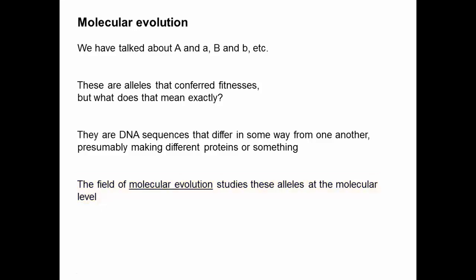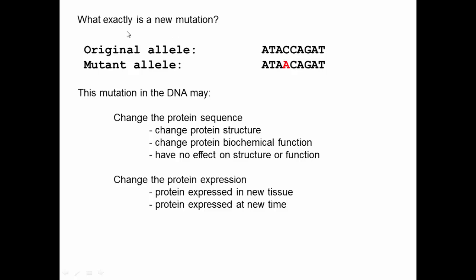If we think about new mutations, the original allele is represented by a nucleotide sequence and the mutant allele will have the same nucleotide sequence but with a different nucleotide at one position. When that occurs, the mutation may do a number of different things: it could change the protein sequence, for example if this was in an exon, and that change could alter the protein structure, shape, or stability.